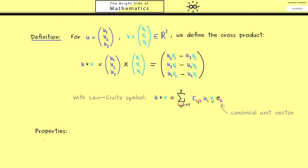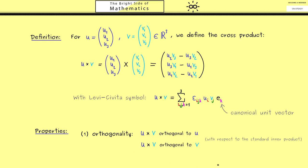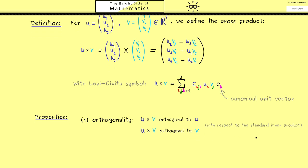Now let's talk about some nice properties of the cross product. The first is orthogonality: the new vector u cross v is orthogonal to both u and to v. This is what you really should remember, because it helps when we want to find orthogonal vectors. This property is with respect to the standard inner product — meaning the inner product of (u cross v) with u is zero, and with v is also zero. This follows directly from the formula and is not hard to prove.